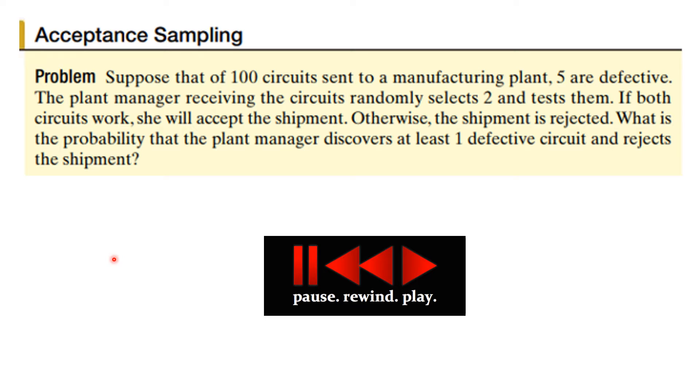Now here's a more complicated but very important problem. Suppose that out of 100 circuits sent to a manufacturing plant, five are defective. The plant manager receiving the circuits does a quality control test, but they randomly select two circuits of the 100 and test them. If both work, she will accept the shipment. Otherwise, the shipment is rejected. What is the probability that the plant manager discovers at least one defective circuit and rejects the shipment? You want to think about that.